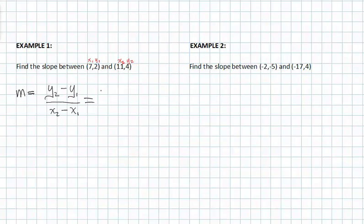So I know that y sub 2 is 4 minus y sub 1 which is 2, all over x sub 2 which is 11 minus x sub 1 which is 7.